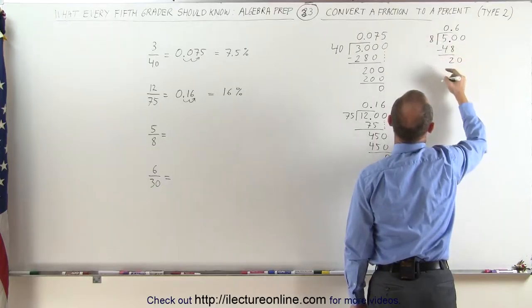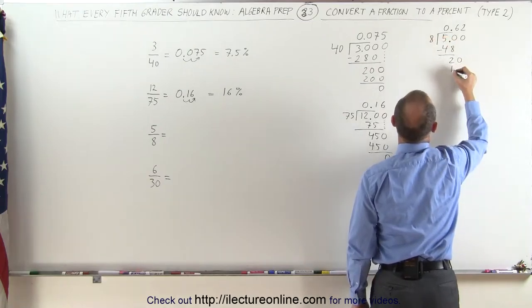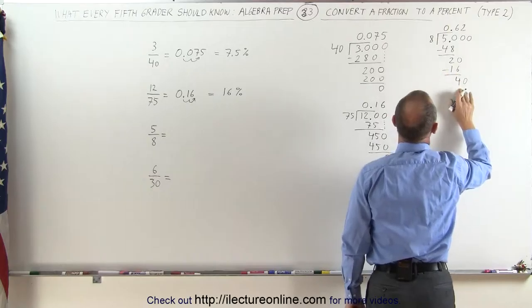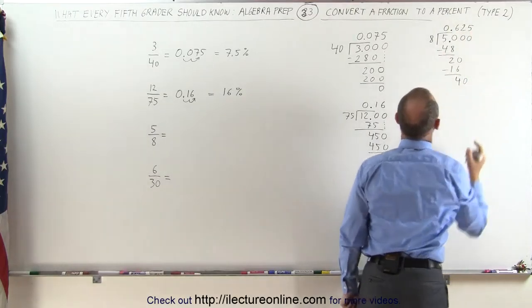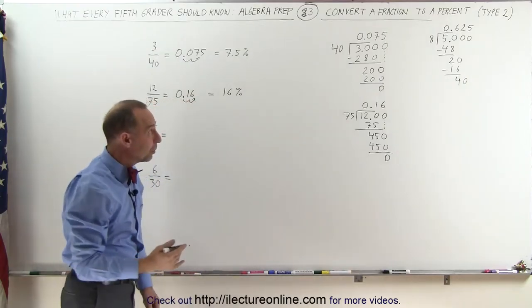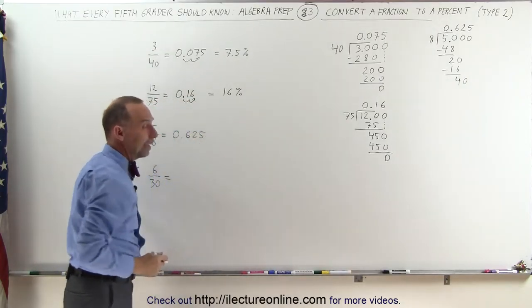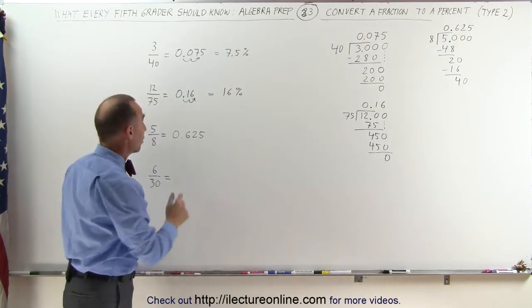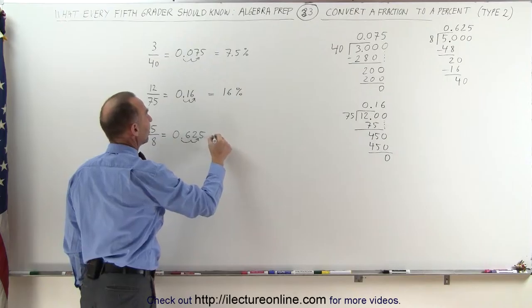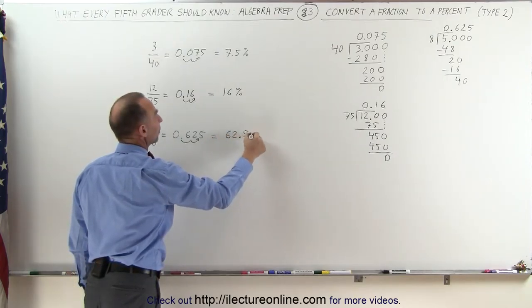Add a 0. 8 goes into 20 — 2 times. 2 times 8 is 16. Remainder is 4. Drop down another 0. 8 goes into 40 — 5 times. Which means 5 divided by 8 can be written as the decimal 0.625. Now that it's written as a decimal, we can turn it into a percentage by moving the decimal place over two spots. This is therefore equal to 62.5%.